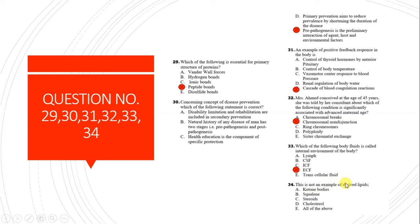Question 34: Which is not an example of derived lipids? Ketone bodies is not an example of derived lipids, while squalene, steroids, and cholesterol are examples. Squalene is an intermediate product of cholesterol synthesis.